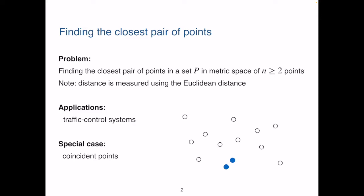A special case input would be that two points are coincident, so they are on top of each other. They will be the closest pair since their distance is zero.